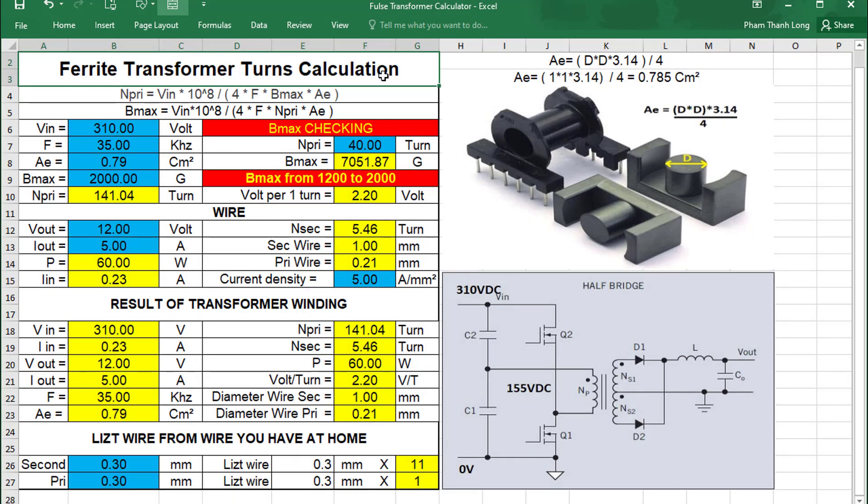This is the Excel file I will share with you. First, the blue cells are the data you enter, the yellow cells are the results after being calculated. Here, we will use the half bridge source technology type. Therefore the voltage across the primary coil will be half of the input voltage.